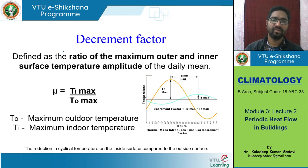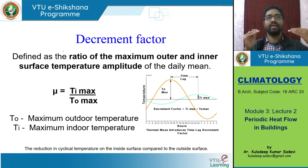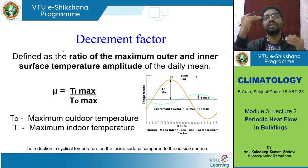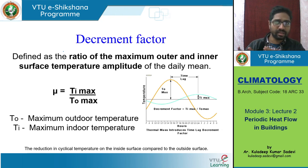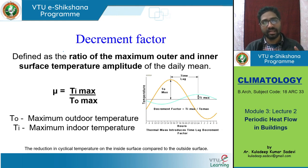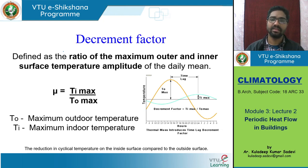Then there is the factor called decrement factor. With time lag, we measured the time distance between when the outdoor maximum and indoor maximum happen. We have not yet discussed how high the maximum actually reaches — how much maximum it reaches outdoors versus how much maximum it reaches indoors. What happens is that if the wall thickness is more, the heat gain is also not as much happening. The overall conduction heat moving inside is much lesser. So when the time lag is more — if the material is thicker — the maximum temperature reached indoors is comparably lesser.